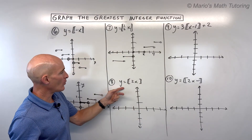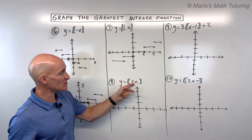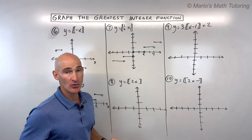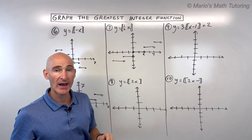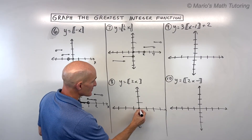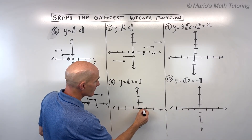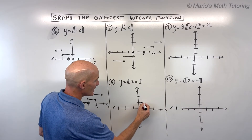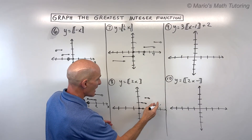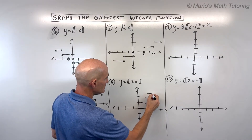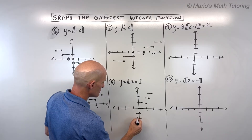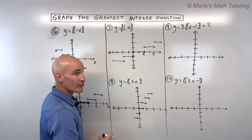For number 8, we've got y equals the greatest integer of 2x. This divides the x values by 2, or equivalently multiplies by 1/2 — it's a horizontal shrink. The stairs are now only half as long, going to 1/2 before jumping up to 1, then to 1 before jumping to the next stair. Each stair is half as long in the horizontal direction.